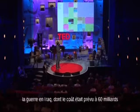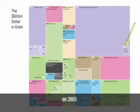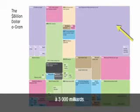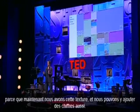And then of course the Iraq war, predicted to cost just 60 billion back in 2003, and the mushroom slightly — Afghanistan and Iraq mushroom now to 3,000 billion. Now it's great because we have this texture and we can add numbers to it as well.